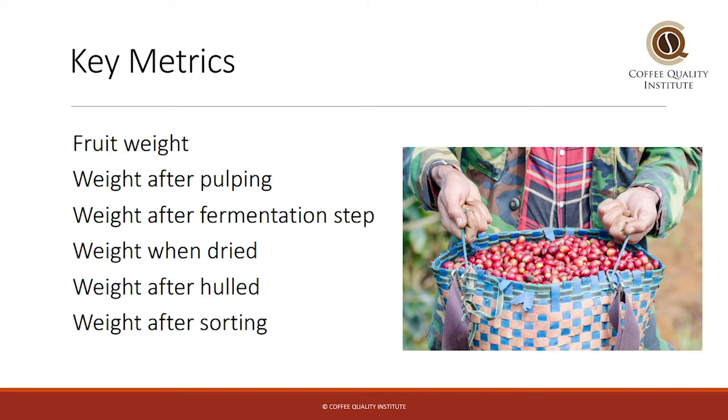And that would include starting with a sample of fresh coffee fruit. You'd want to weigh that, and then you'd want to pulp that, and then weigh what is the pulped parchment weight. Try to say that ten times fast. Then maybe you're doing a washed coffee, so then you ferment that coffee, you put it through the fermentation step, and then you wash it clean. After you wash it and drain it, so you're getting ready to put it out on your patios or your raised beds, what does it weigh? And you want to keep the same volume together so you can follow the ratios through the entire process.